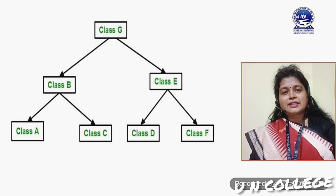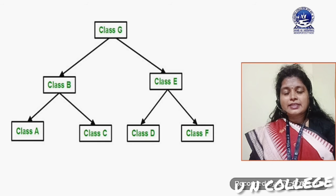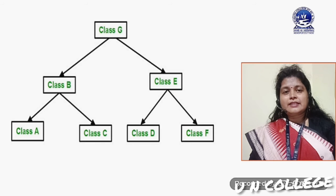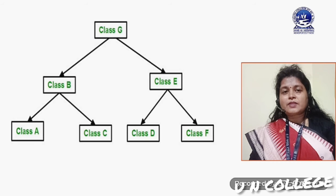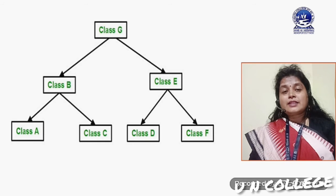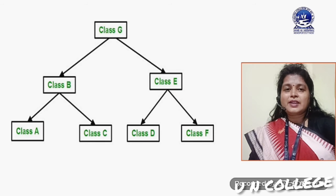Here I have used another diagrammatic representation to make hierarchical inheritance clearer. You can see that class G is the parent class, then class B and class E are child classes of class G. Class A and class C are child classes of class B, and class D and class F are derived classes of class E. This clearly shows the structure of hierarchical inheritance. I hope you have understood this concept.